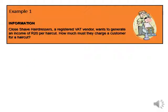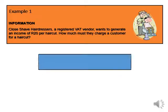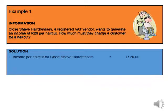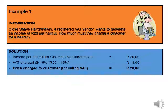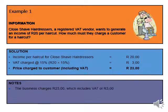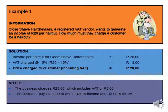Let's look at some examples. Close Shave Hairdressers, a registered VAT vendor, wants to generate an income of R20 per haircut. How much must they charge a customer? The R20 is what they want to keep. They cannot charge only that — they need to add VAT. So it's R20 times 15%, which is R3, meaning they must charge the customer R23. Of that R23, R20 is income for the business and R3 is VAT paid over to SARS.